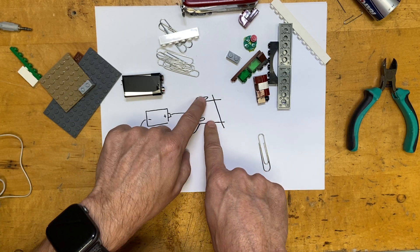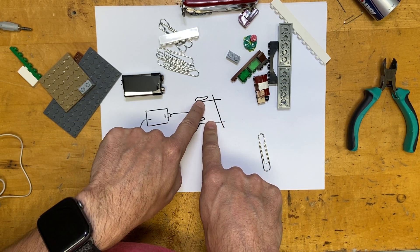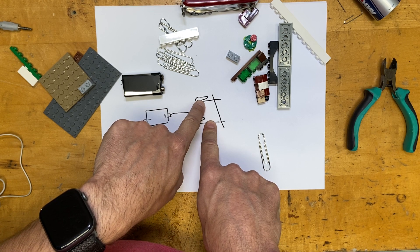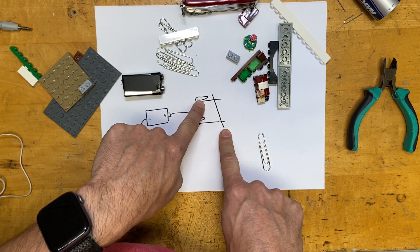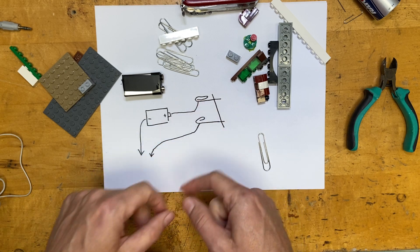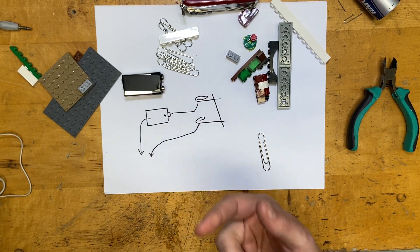We're going to go ahead and build this. The key thing is we need to have two paperclips here to hold this and we're going to need to cut a paperclip to put across there. I'm going to go ahead and start off with this.